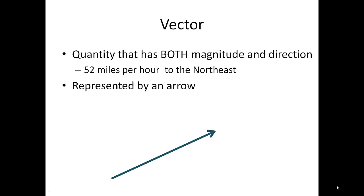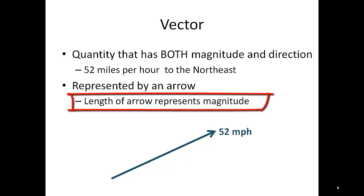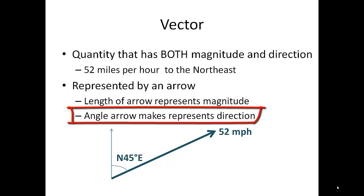So vectors are represented by arrows. The length of the arrow tells us the magnitude of the vector. The longer the vector, the bigger the magnitude. The angle the arrow makes represents the direction. Now there are several different ways to represent direction.